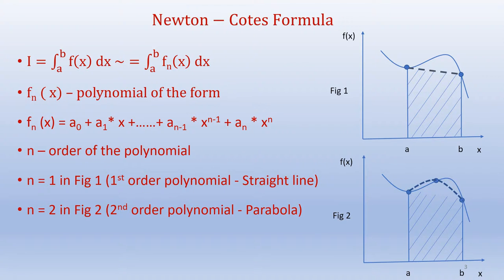Here n represents the order of the polynomial. If you use n equals 1, as shown in figure 1, which is the first order polynomial represented by a straight line, we get the trapezoidal method. If n equals 2, as shown in figure 2, if you use a second order polynomial, this is represented by a parabola.